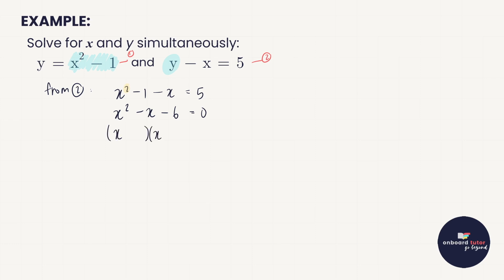This is a quadratic equation because of the square, so I need to pull everything to one side: x squared minus x minus six equals zero. I can factorize that — x times x gives me x squared, and factors of six. Three times two gives me six. To make minus one in the centre, I use minus three plus two. A minus times a plus is a minus, three times two is six. So that gives me two answers: either x minus three equals zero, meaning x equals three, or x plus two equals zero, meaning x equals minus two.